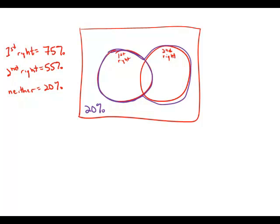If that's 80% and the first circle is 75%, it means that this area here in the second circle — the part of the second circle outside of the first circle — has to be 5%. That's the extra 5%. And if the entire second circle is 55%, it means that there must be 50% in this overlap region. That would mean that there was 25% just in this region here.